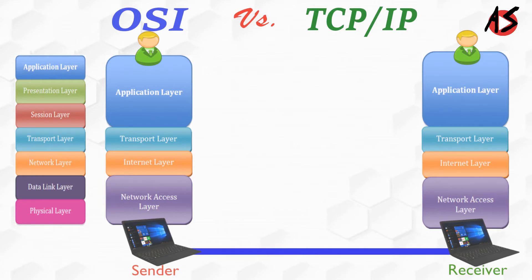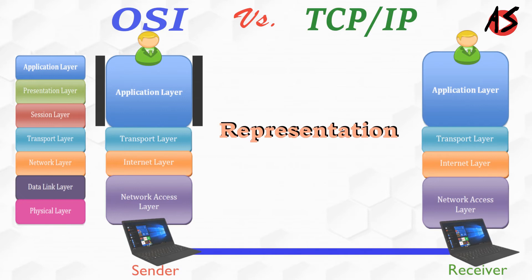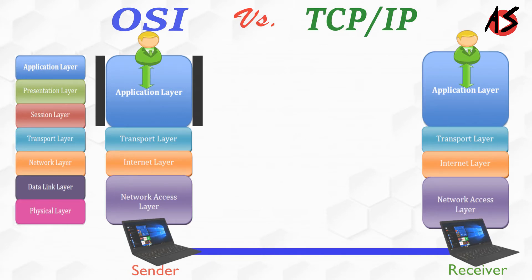In the TCP/IP model we have 4 layers. The topmost layer is called the Application layer. This layer is responsible for handling high-level protocols and deals with issues of representation. This layer allows the user to interact with the application.